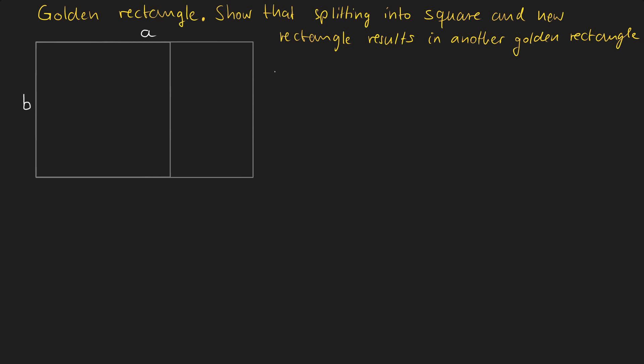We will start by collecting the information we know. We know that the ratio from A to B is the golden ratio. Meaning that A divided by B equals 1 plus the square root of 5 divided by 2. And in this exercise I will call this golden ratio phi.